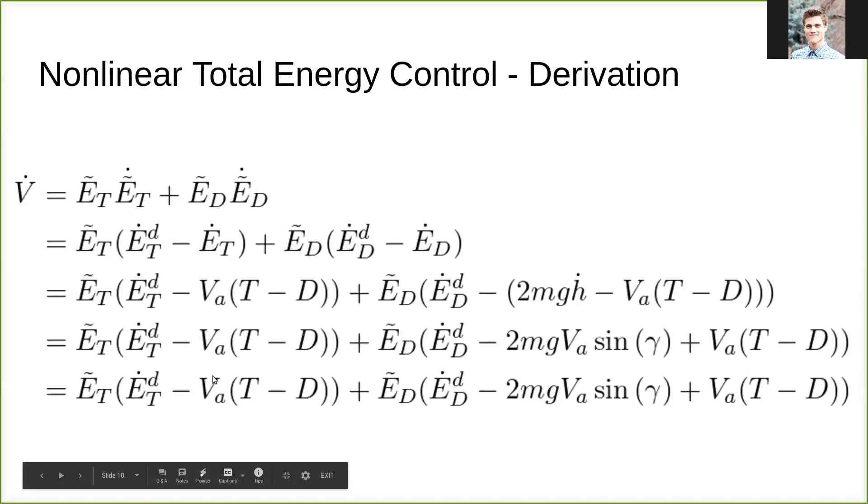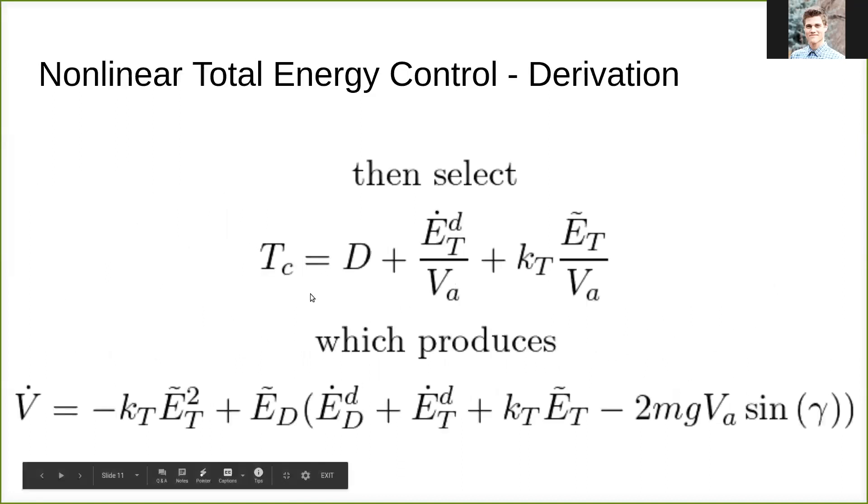First, we'll control this portion to get it to be negative definite using our thrust command. If we solve for thrust as follows, then we can subtract off of the terms that already exist and add in a proportional gain term based off of the error in our total energy currently, which produces our new Lyapunov derivative, where we now have left over this K_T term, which we can control as a rate for our system.